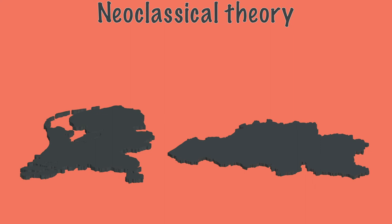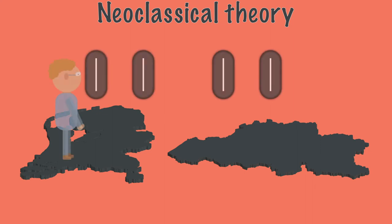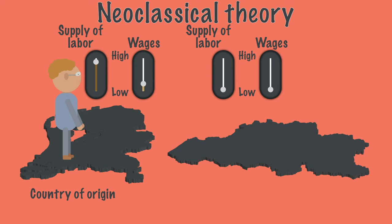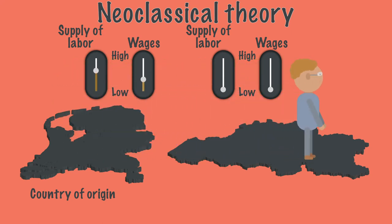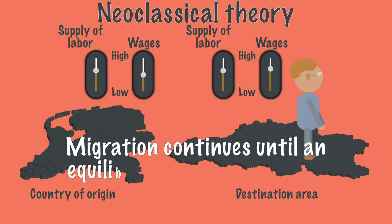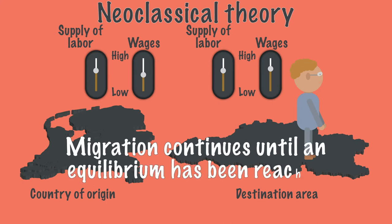The same kind of theory is the neoclassical theory. It assumes that migration occurs because there are many employees in departure areas, which means that wages are low there. As people migrate, the supply of workers will fall, which will cause wages to rise. In the destination region, where there are few workers and wages are high, the new workers will increase the supply of workers, causing wages to fall. In this way, a kind of equilibrium is created where wages will become about the same and migration will stop.